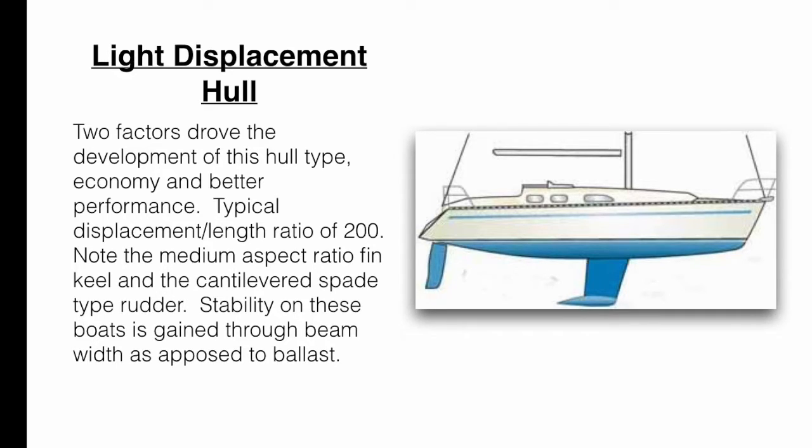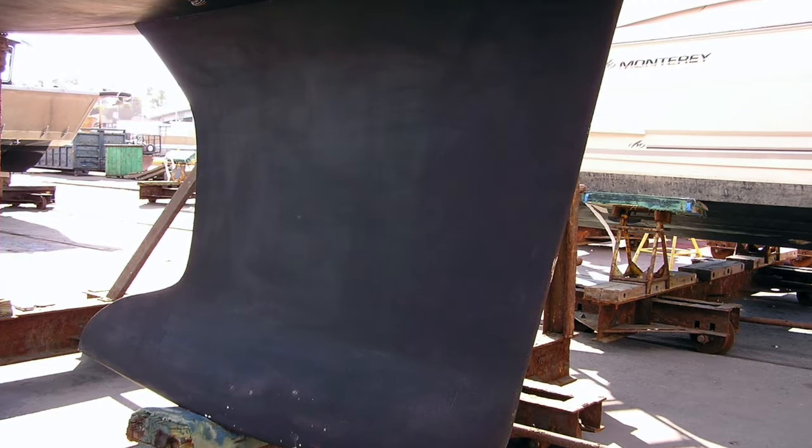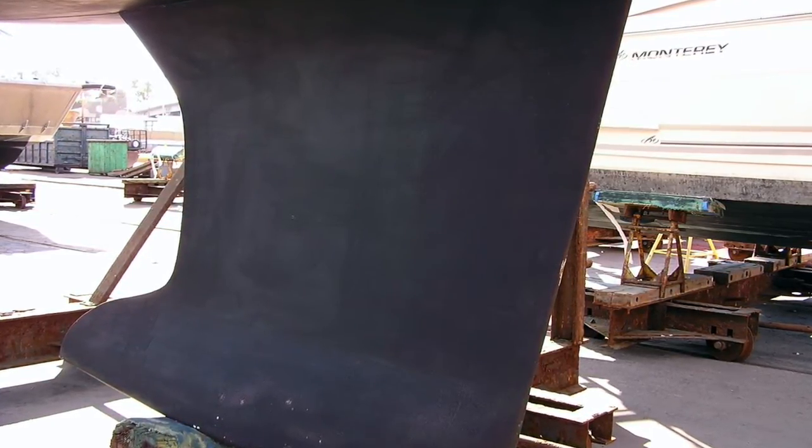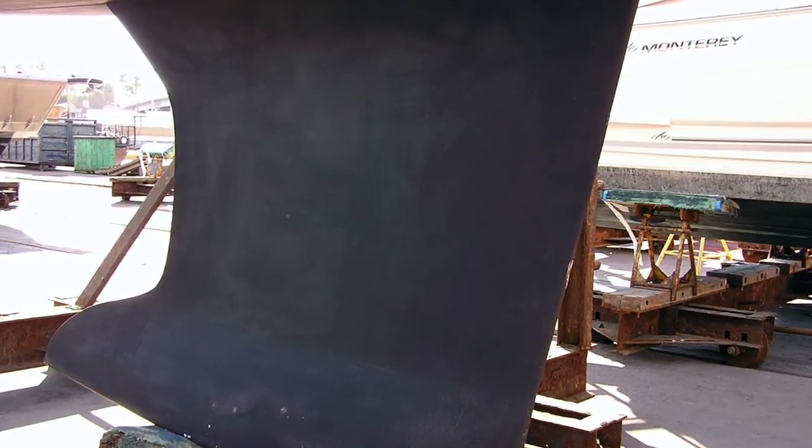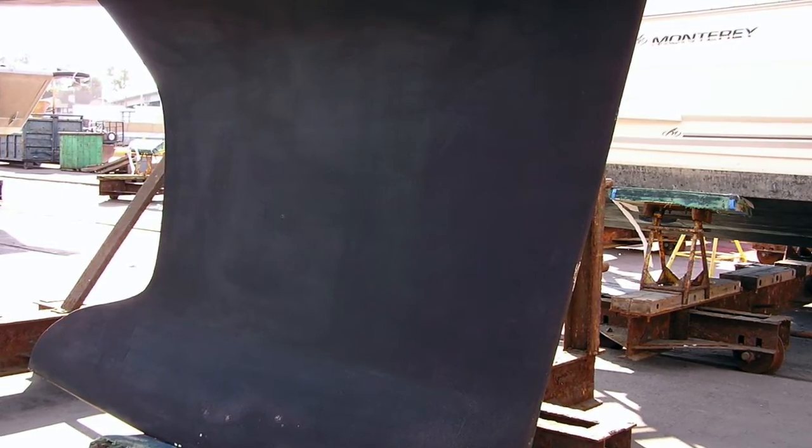The light displacement hull is driven partially by the need for economy in what had become a very competitive market. Lighter means less material and an increasing demand for better performance. More and more yachts are falling into this lighter yacht category, typically with a displacement length ratio of around 200. A modern light displacement production boat, often dubbed as a cruiser racer, will sport a medium aspect ratio thin keel.